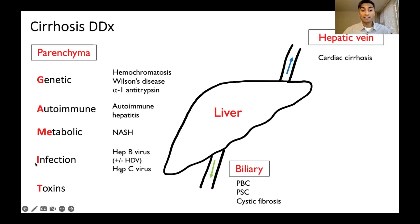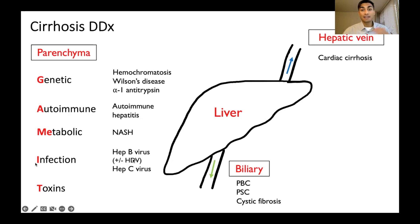For infectious causes, we're looking at hepatitis B virus, which may or may not have superimposed hepatitis D infection, and also hepatitis C. So hepatitis B, C, and D are the ones to think about for infectious causes of cirrhosis.